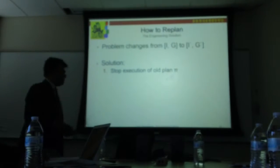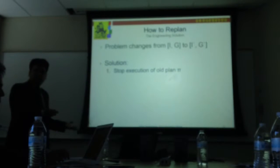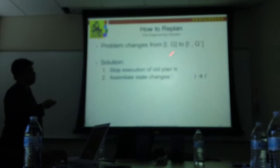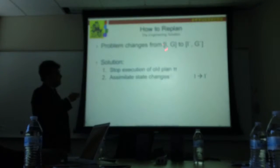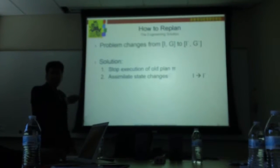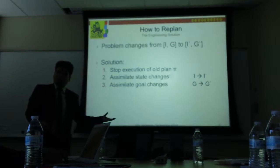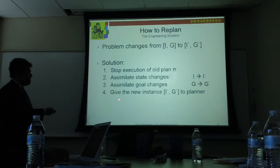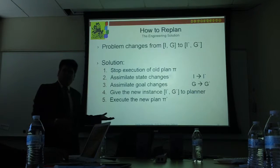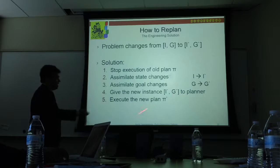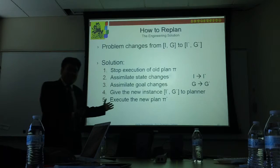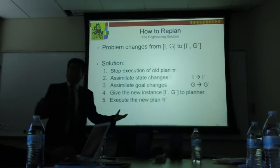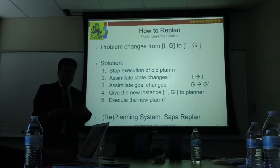As an engineering solution to handle this, you stop executing the old plan, because the old plan may no longer be valid in the world. Then you assimilate those state changes — what has changed from the state you started planning for to the current state. You also assimilate changes in goals, give that new instance to the planner, and it comes up with a new plan. This is basically replanning from scratch.